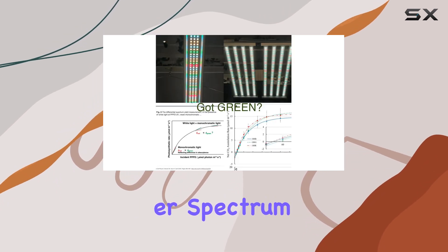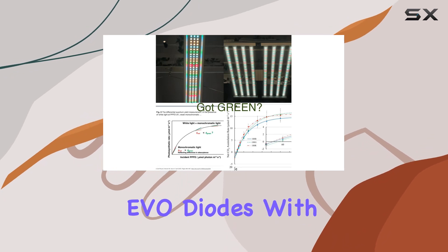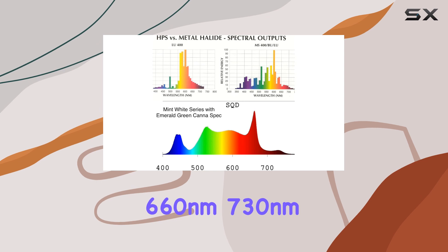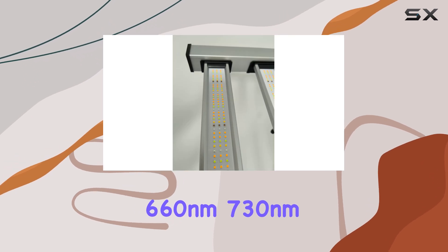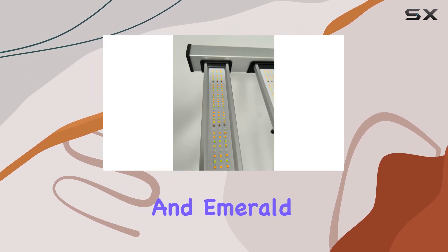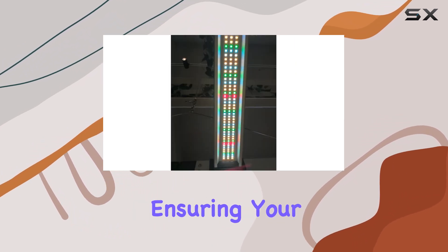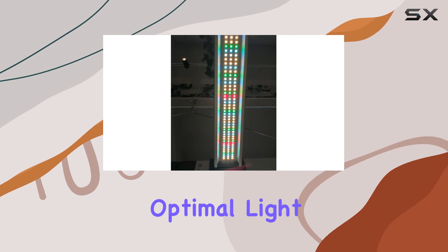What sets this grow light apart is its fuller spectrum blend combining Evo diodes with high efficiency 3000K, 5000K, 660 nanometers, 730 nanometers, and emerald green diodes. This spectrum is tailored for every stage of plant growth, ensuring your plants receive optimal light wavelengths for photosynthesis and development.